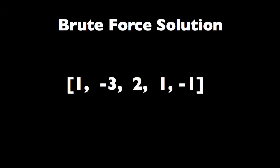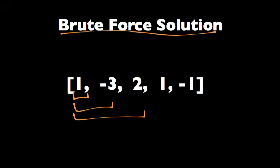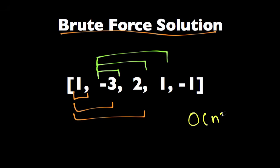The simplest solution to this problem is the brute force solution — basically checking all the possible subarrays and picking the one with the maximum sum. I would check the subarrays starting at the first index, then check the ones starting at the second index, and so on. It's a good solution, but it would take O(n²) time, and it's not the optimal solution.